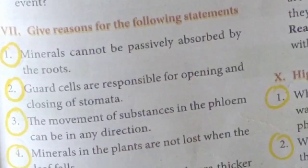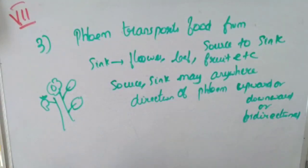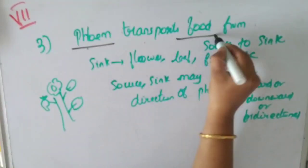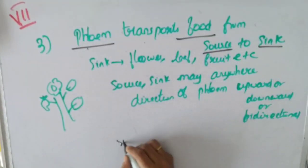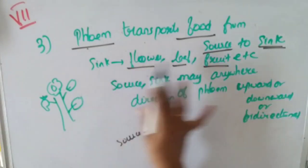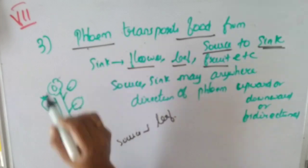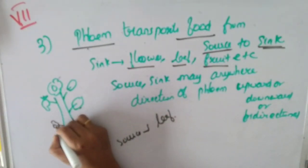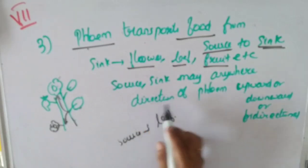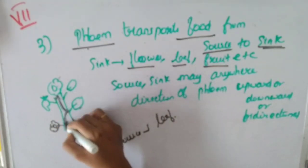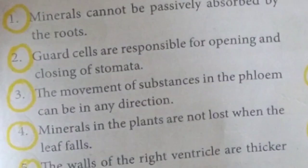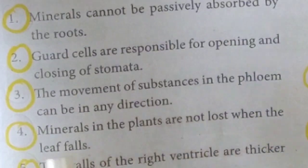The movement of substances in the phloem can be in any direction. What is the flow? The phloem transports food from source to sink. The source is the leaf, because that is where food is made. The sink can be fruits, seeds, flowers, buds, or roots. So the direction of flow can go from a leaf to a fruit, to a seed, to a root — in multiple directions depending on the plant's needs.